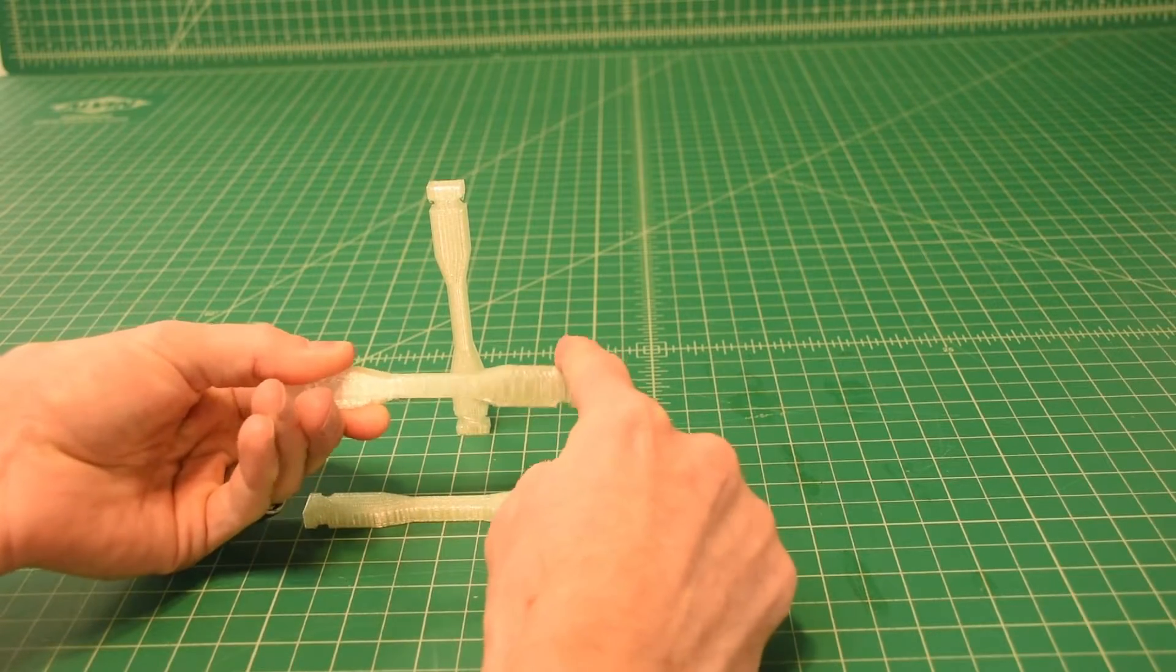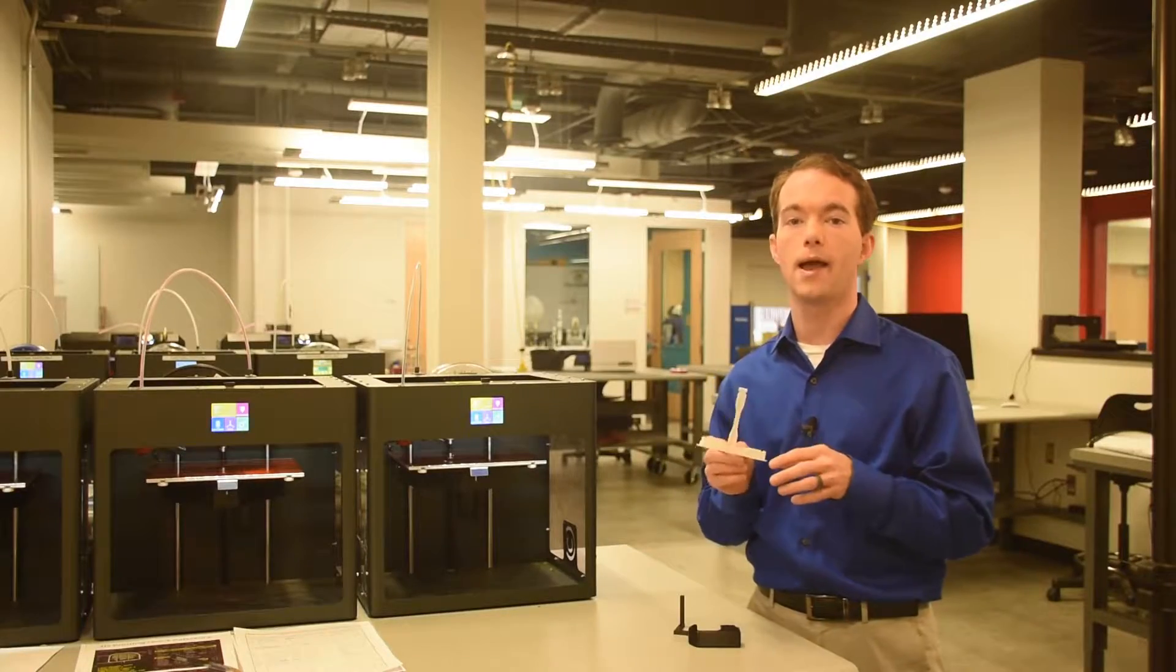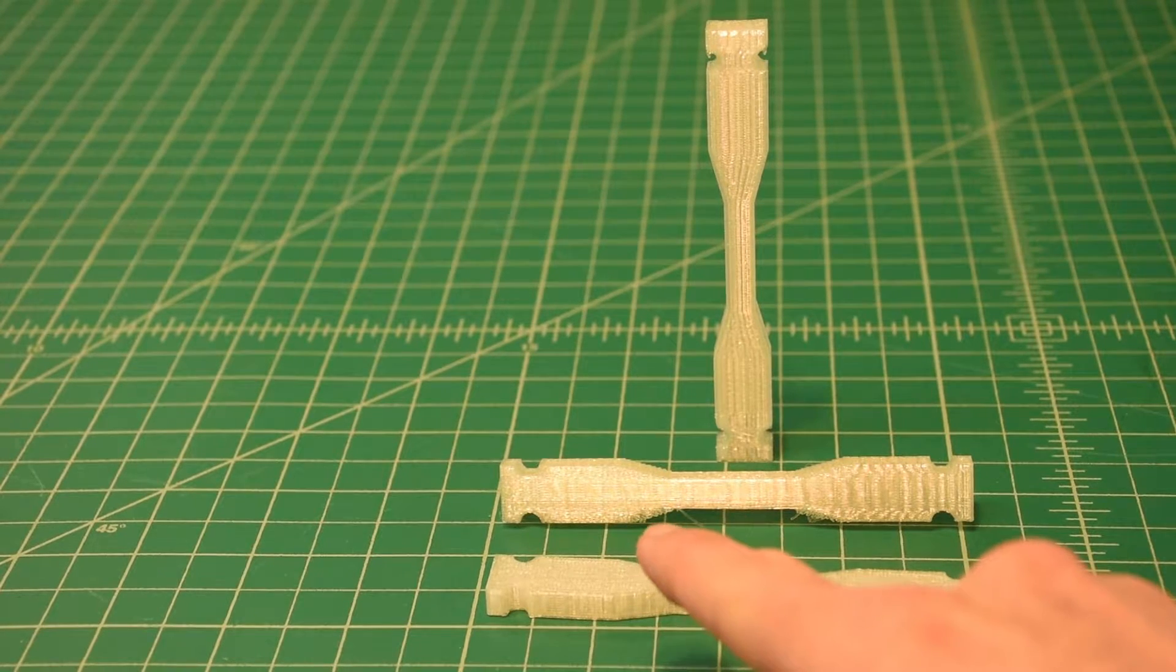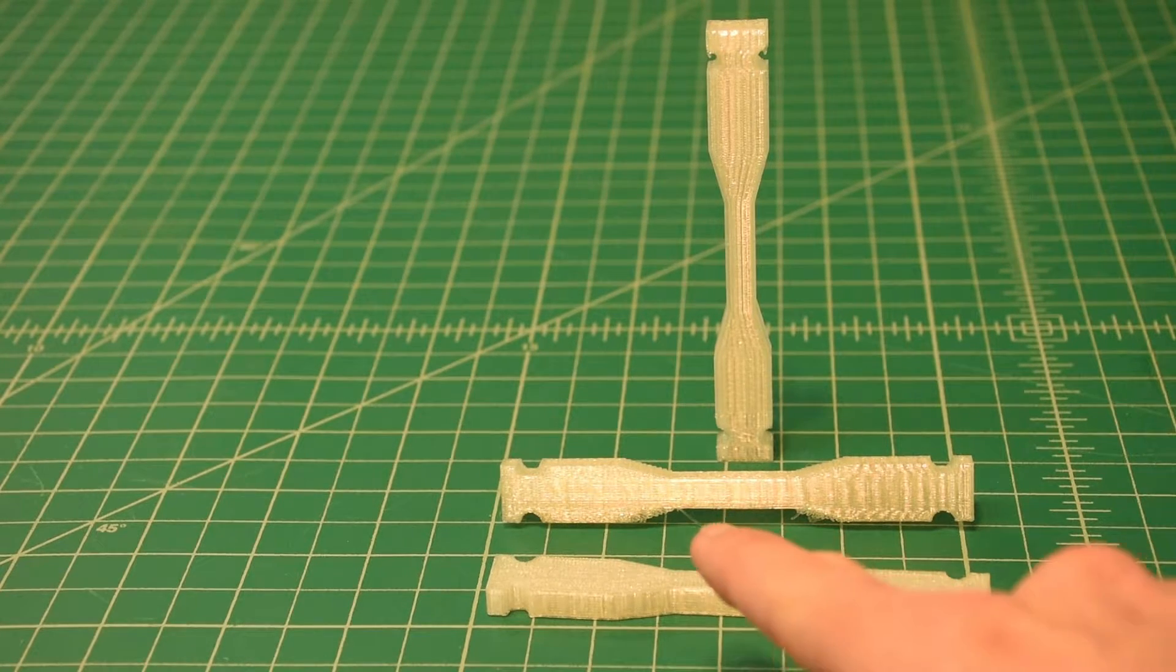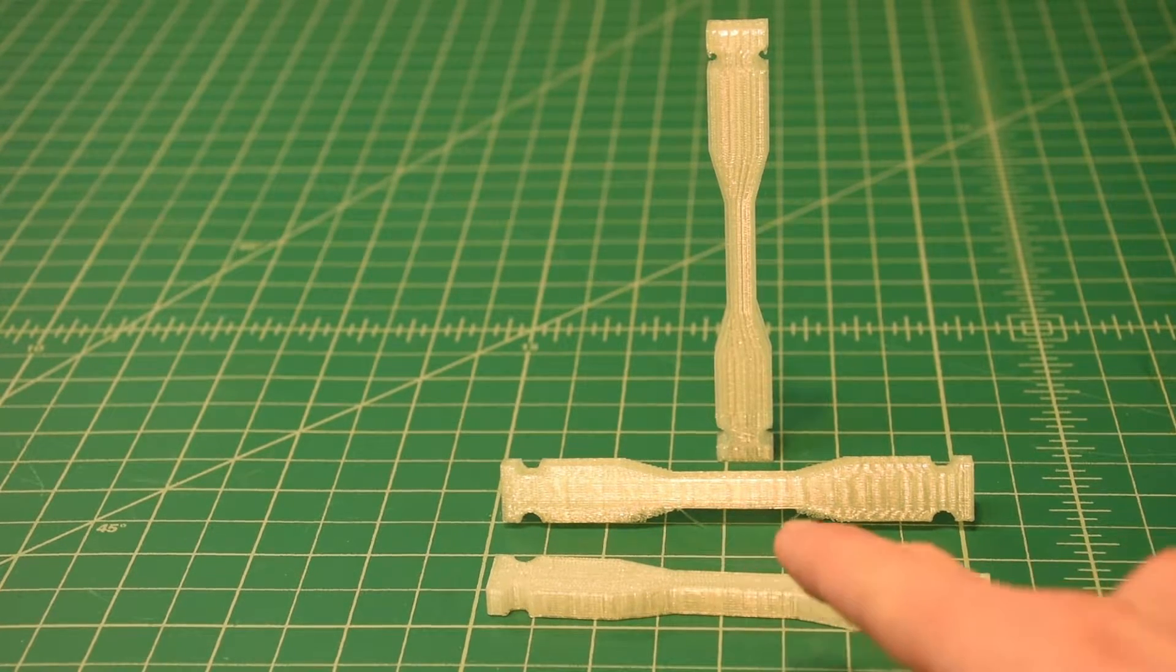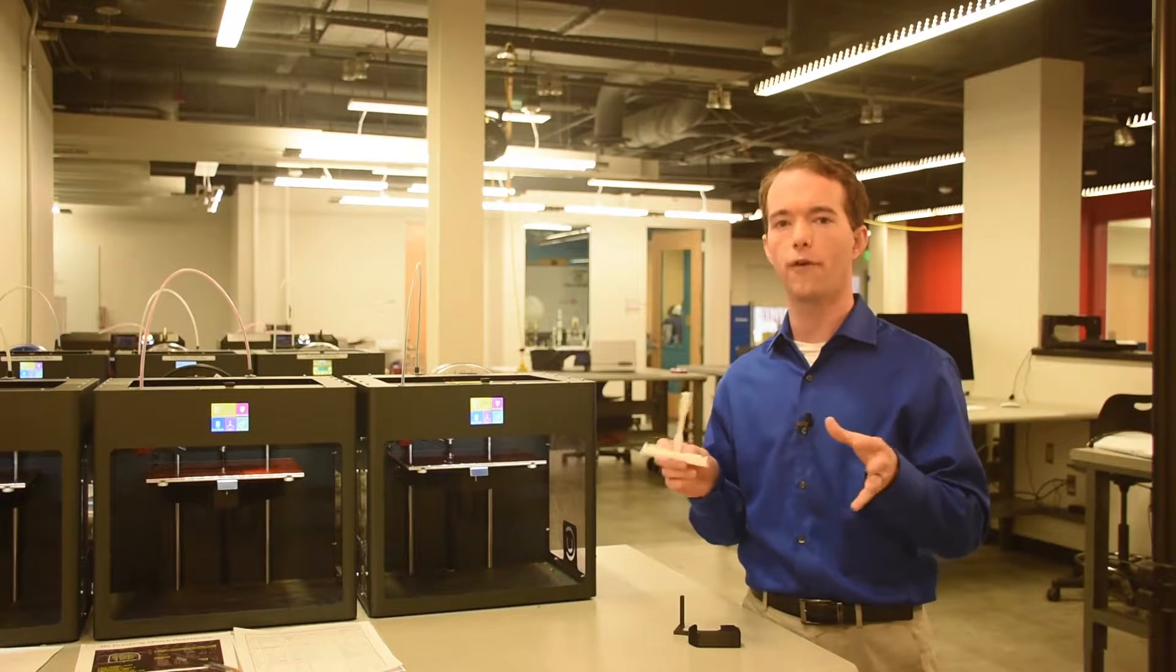This guy is okay in bending though, but it's not the optimal layout. You can see that support should have been added here because this gap was a little bit too far for the filament to bridge. But you know how I feel about support.